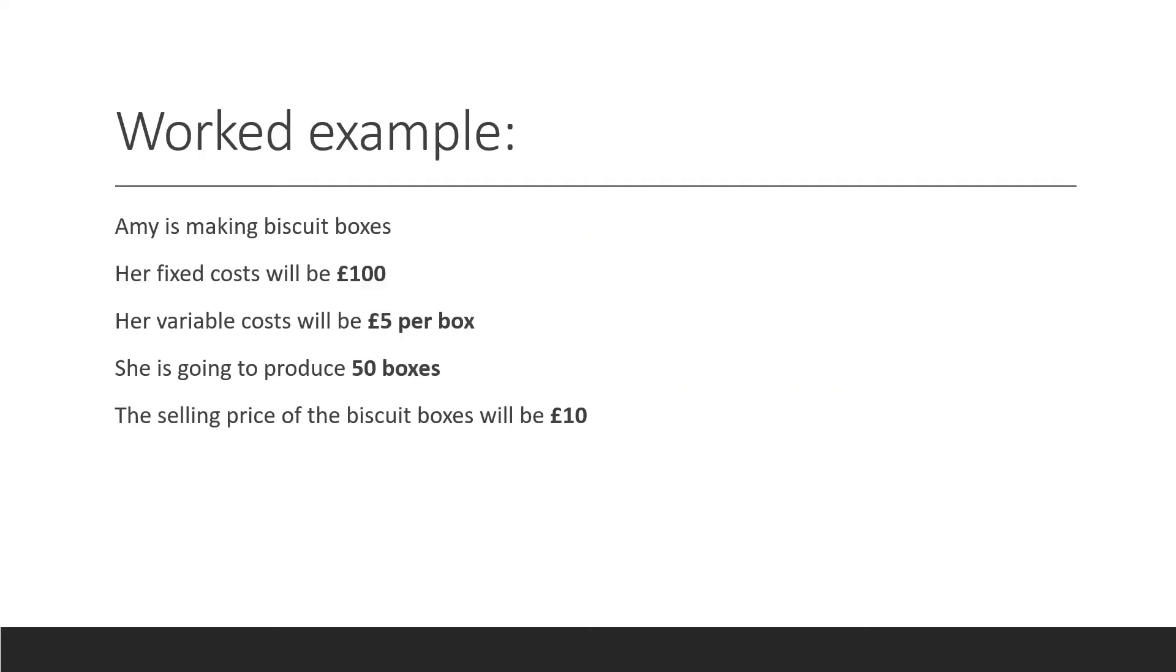Here's a worked example. So Amy is making biscuit boxes. Her fixed cost will be £100. Her variable cost will be £5 per box. And she's going to produce 50 boxes. The selling price of the biscuit boxes will be £10.